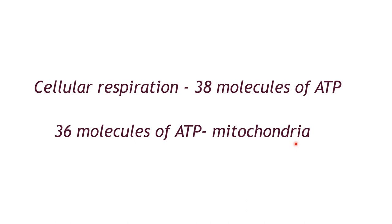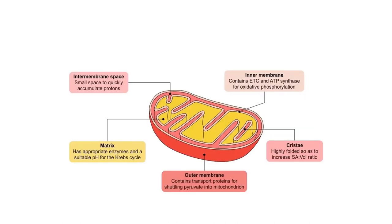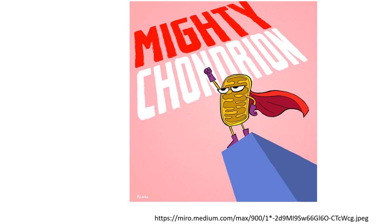If not for the mitochondria, cells would be unable to produce enough energy from food, and all cellular functions would cease. The reason mitochondria can generate energy as ATP is because it houses various enzymes and structures that help in cellular respiration — such as transport proteins in the outer membrane to import pyruvate, enzymes of oxidative phosphorylation in the inner membrane, and enzymes needed for the Krebs cycle in the matrix.